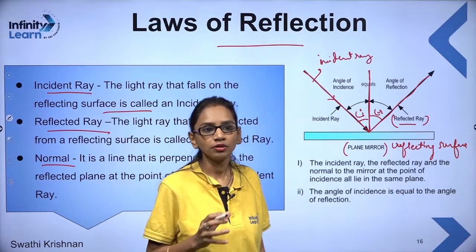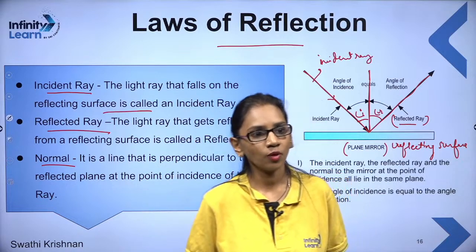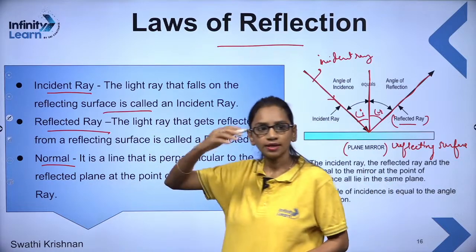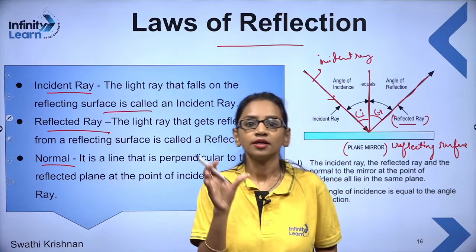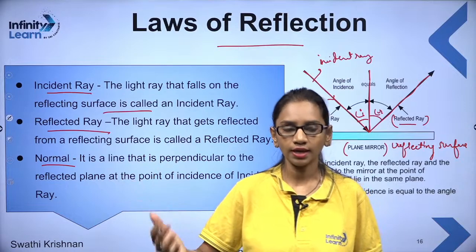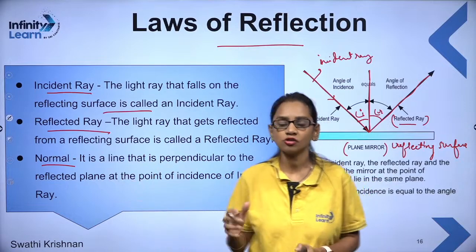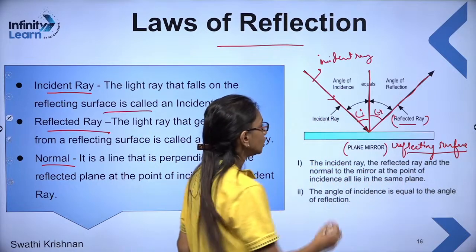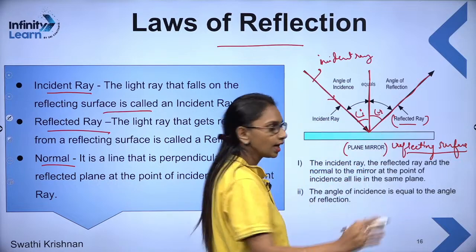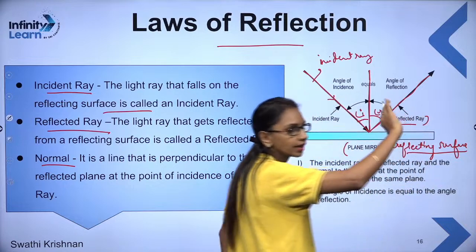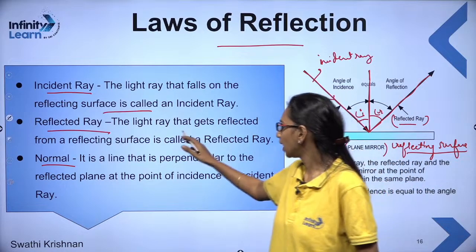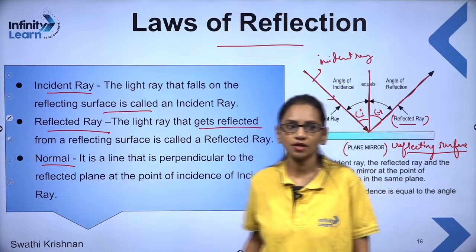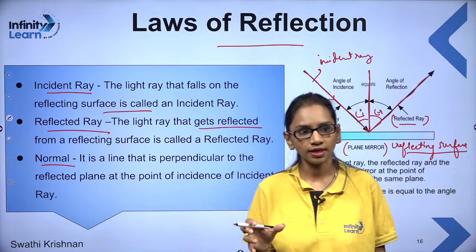The reflected ray is the light ray that bounces back from the reflecting surface. When the incident ray falls on your reflecting surface such as a mirror, and the light bounces back — that is basically your reflected ray. The light ray which gets reflected back from the reflecting surface like a mirror is your reflected ray.